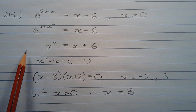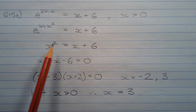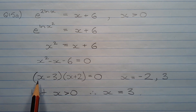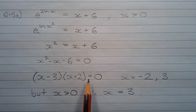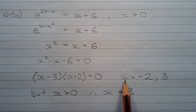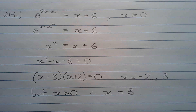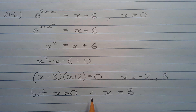Then we can factorise the left-hand side, so we have x minus 3 times x plus 2 equals 0, giving x equals negative 2 or positive 3 as solutions. But since x is greater than 0, the only possible solution is x equals 3.